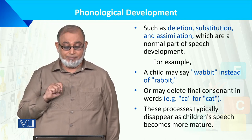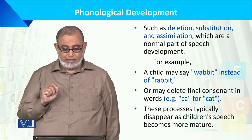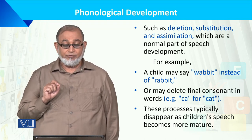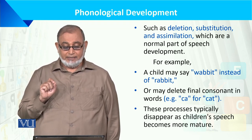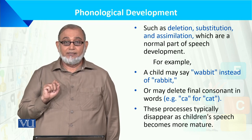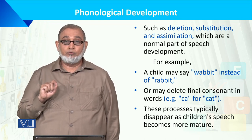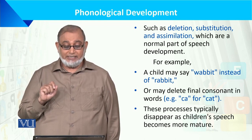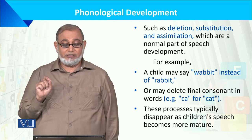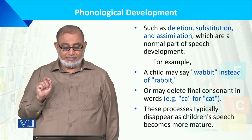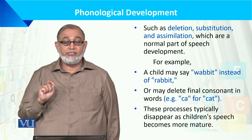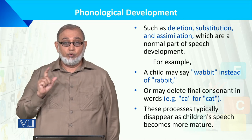A child may say 'wabbit' for 'rabbit', and may delete the final consonant of a word — for example, saying 'ca' instead of 'cat'. These processes typically disappear as children's speech grows.